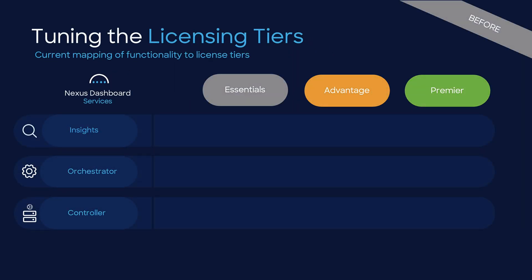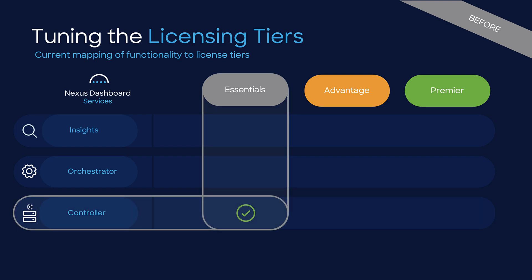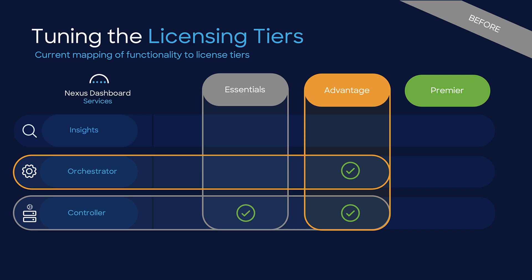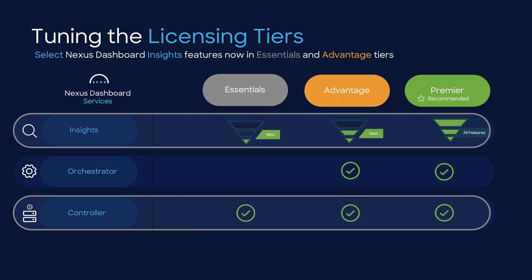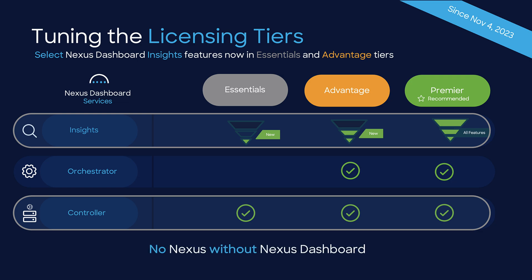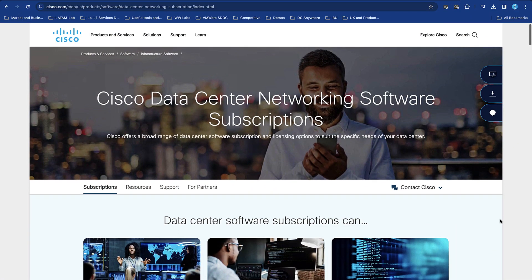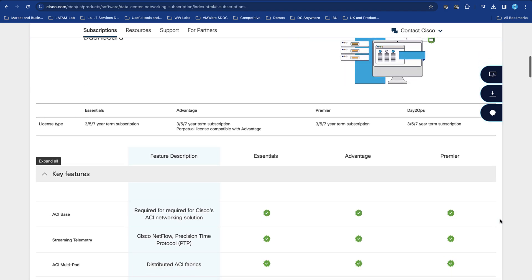Before, Controller was available for customers with switches in the Essentials License tier. Orchestrator was then added for those using Advantage, and Insights was only available for those customers whose switches were running the Premier tier. However, one of the latest changes as of November 4, 2023 is that a select number of Insights features are now included as part of the Essential Switch License tier. This means that if you are a Nexus customer, whether new or existing, you should be using Nexus Dashboard — because you already paid for it and it is a great platform to automate, manage and operate your Nexus and other Cisco and third-party networks. You can find more about the features included in each licensing tier by visiting the Cisco Data Center Networking Subscription page.